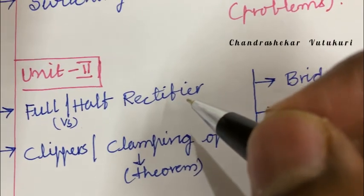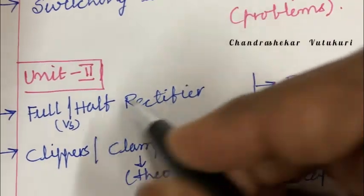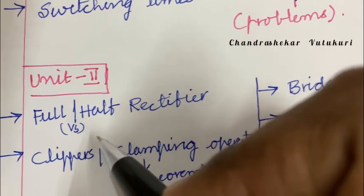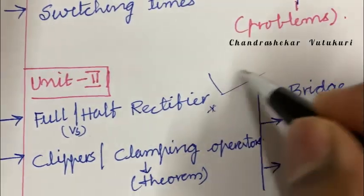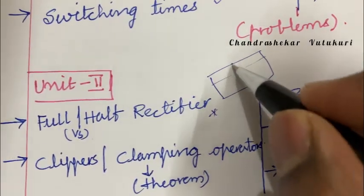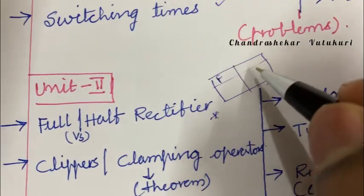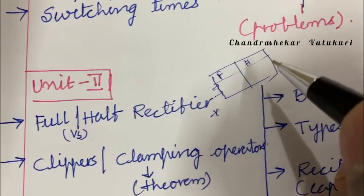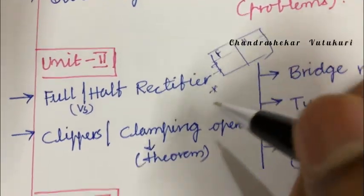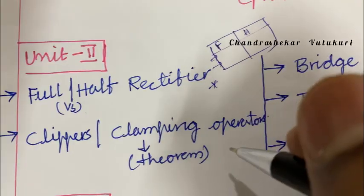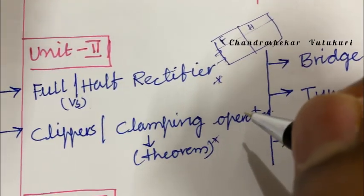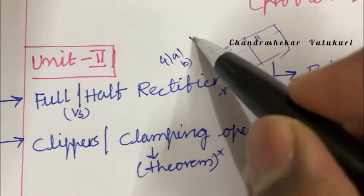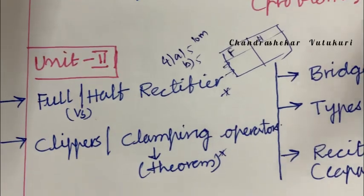Unit 2 is all about rectifiers. You may get a question on the full wave versus half wave rectifier — if it is a comparison, work out a tabular column in pencil with the full wave rectifier on the left and the half wave rectifier on the right, writing only in bullet points. The clamping theorem and clampers are set to be the topmost question, appearing in 4A and 4B. Do not expect a direct 10-mark question — it is a combination of five plus five split.